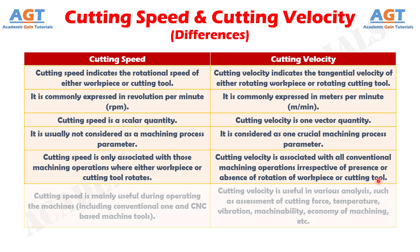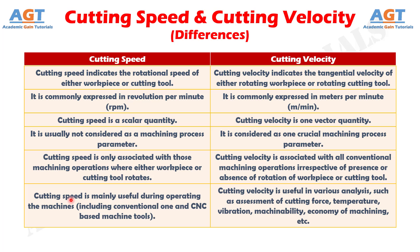And difference number 6: cutting speed is mainly useful during operating the machines, including conventional and CNC-based machine tools, whereas cutting velocity is useful in various analyses such as assessment of cutting force, temperature, vibration, machinability, economy of machining, etc.